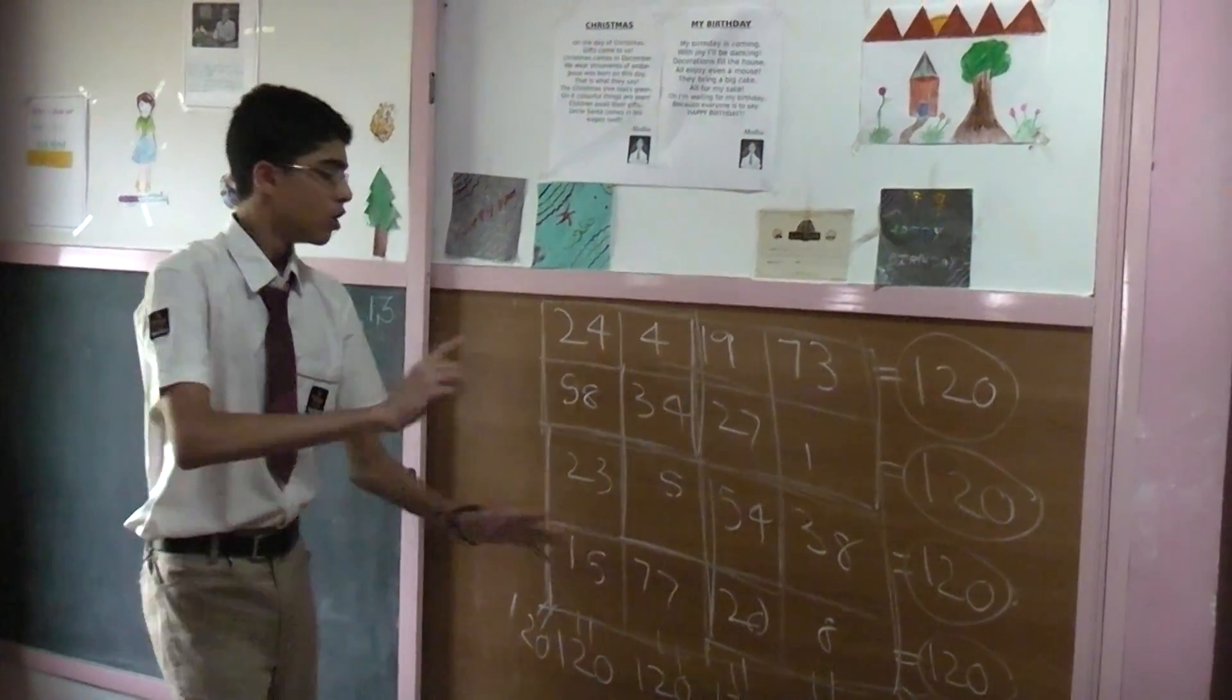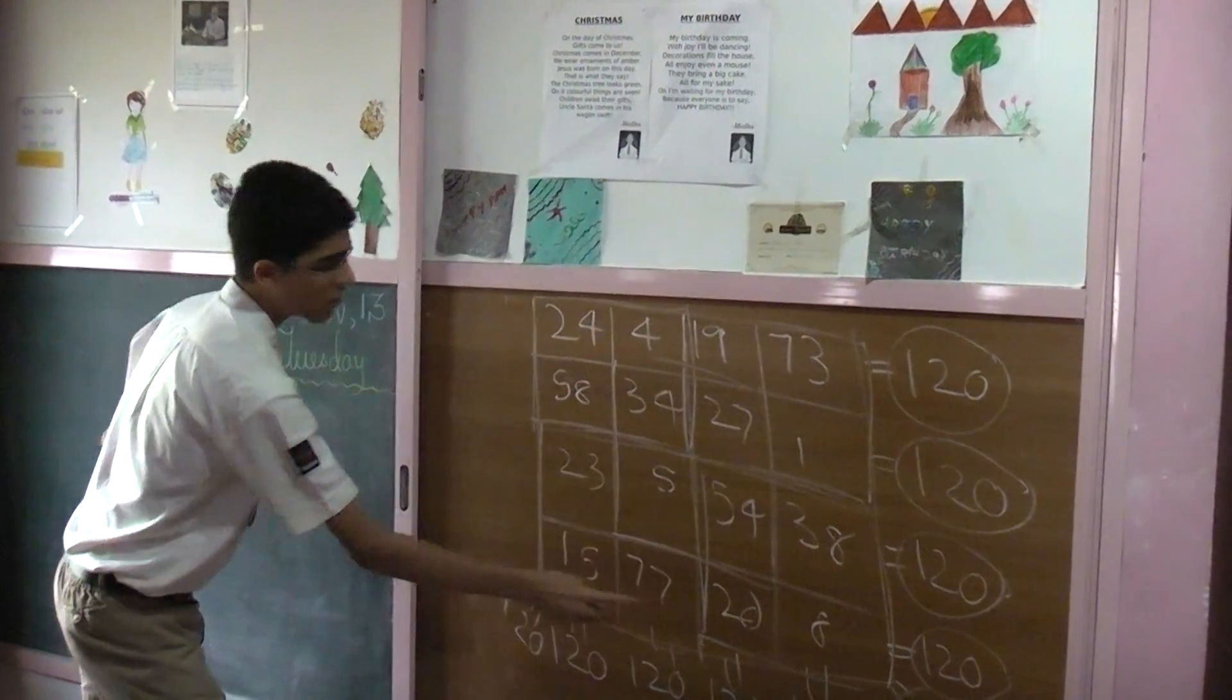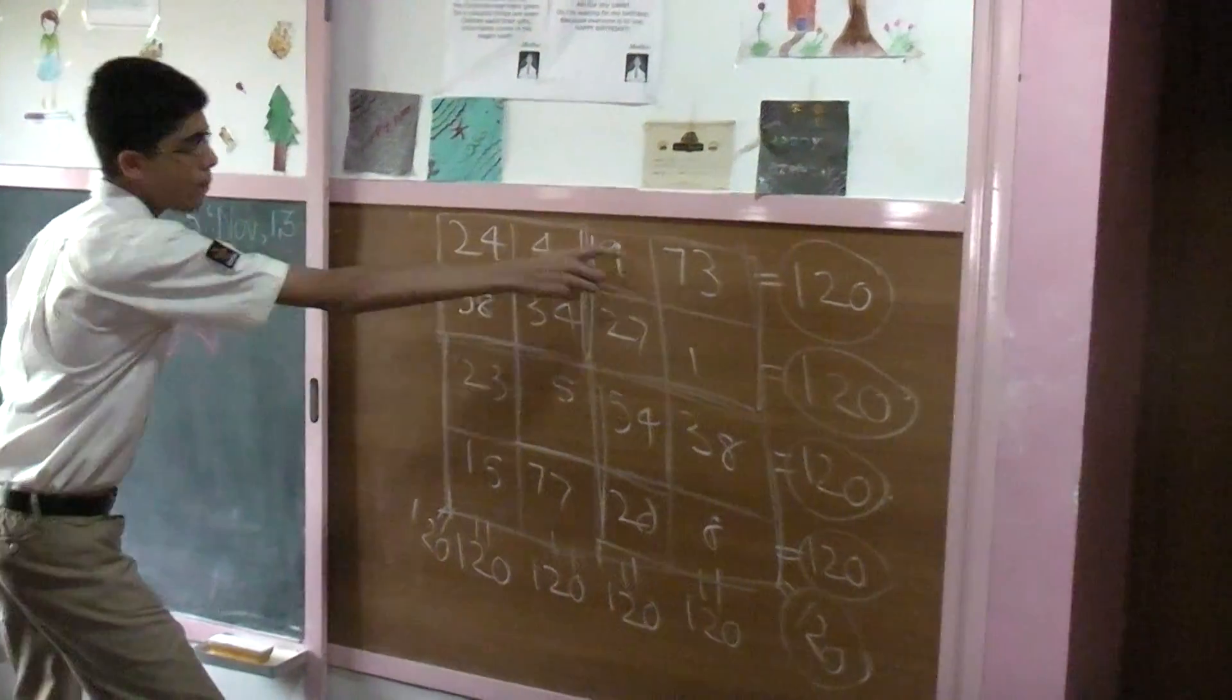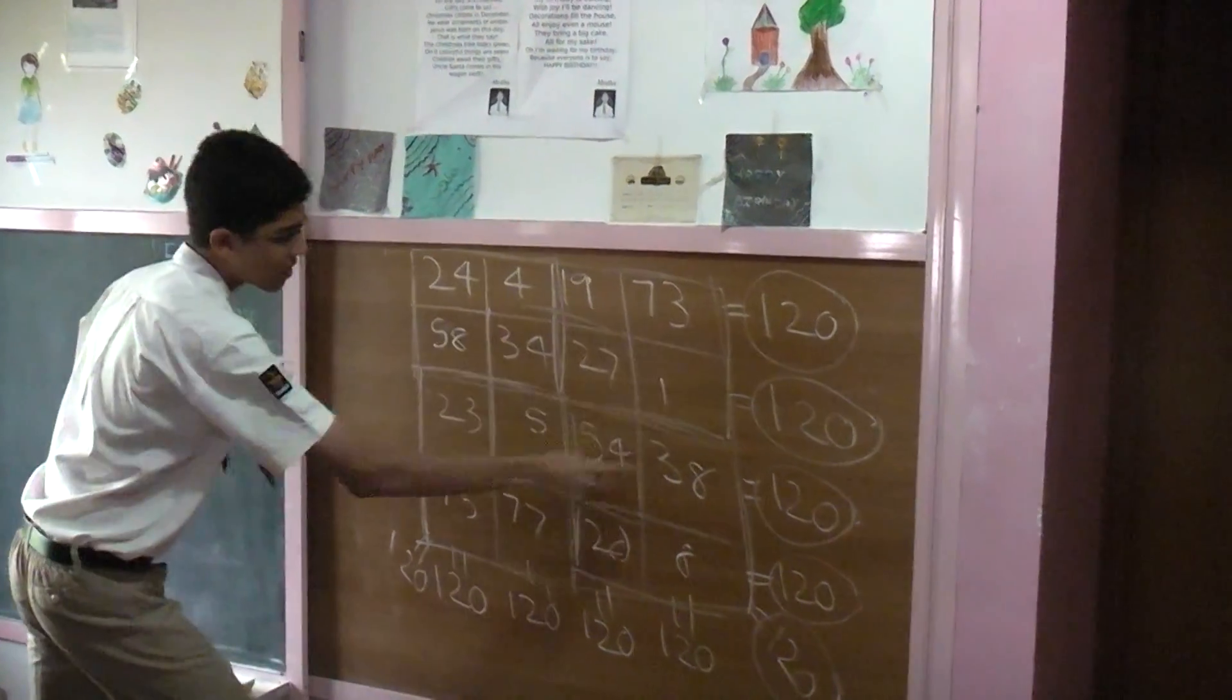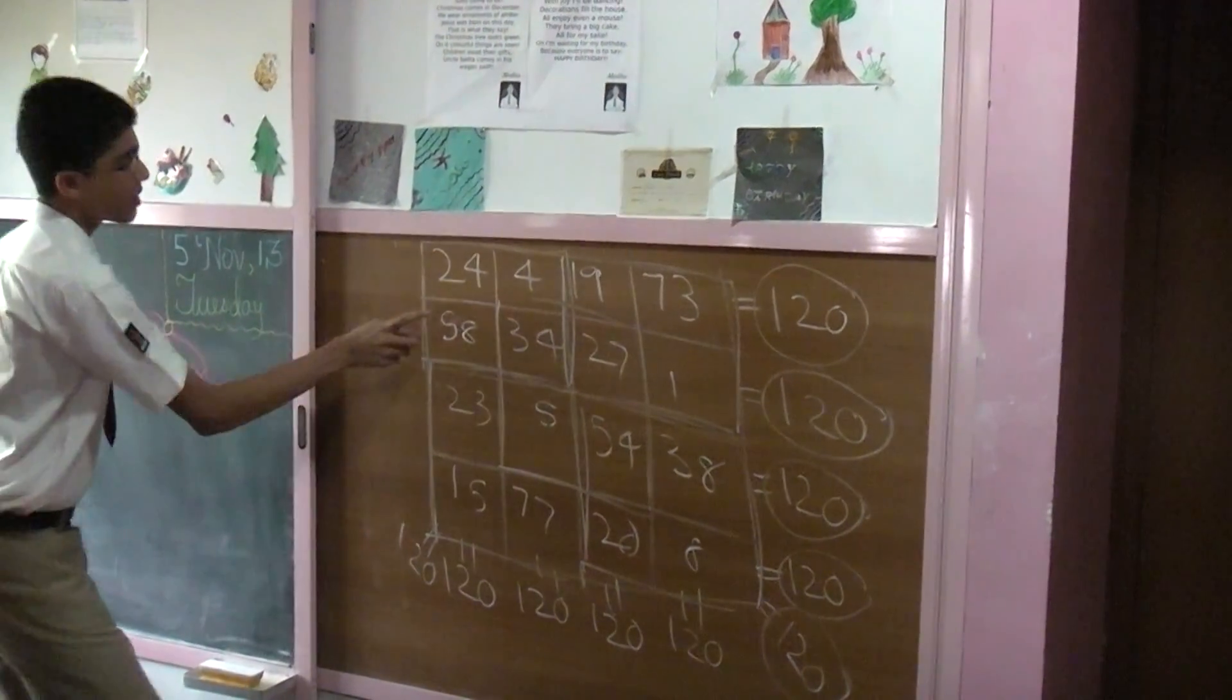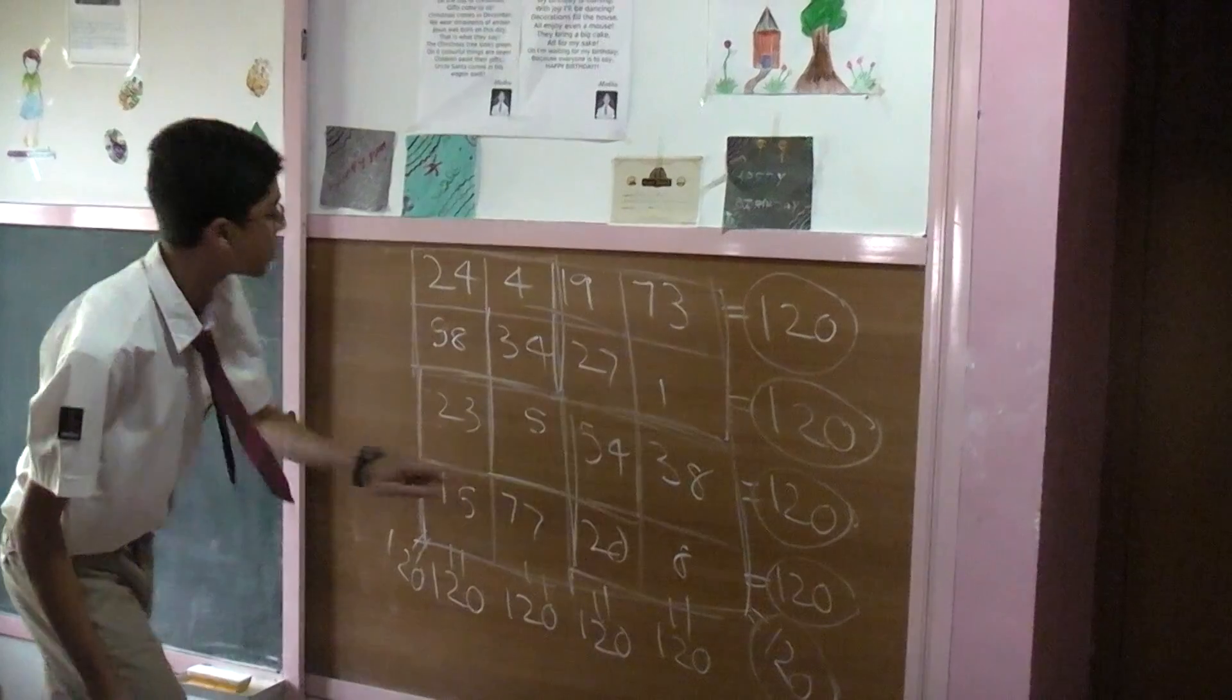But, did I stop there? No. You add 24 plus 4 plus 15 plus 77, you get 120. 4 plus 19 plus 77 plus 20, you get 120. 19 plus 73 plus 20 plus 8, you get 120. You add this one plus this one plus this one plus this one, you get 120.